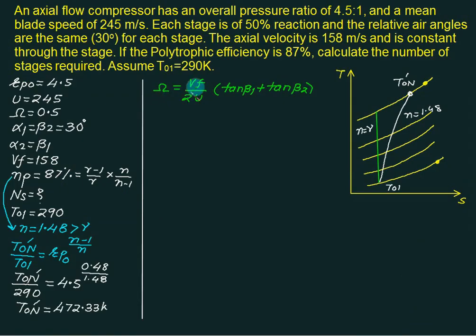We have degree of reaction equal to Vf divided by twice u times tan beta 1 plus tan beta 2. Degree of reaction is 0.5, Vf is equal to 158, u is equal to 245, beta 1 we do not know, beta 2 is given to us as 30. We can solve for beta 1. Beta 1 comes out to be 44.22 degrees.